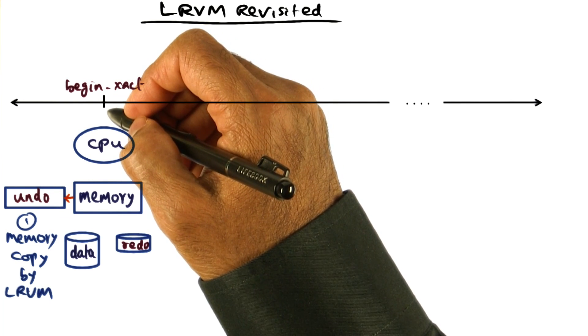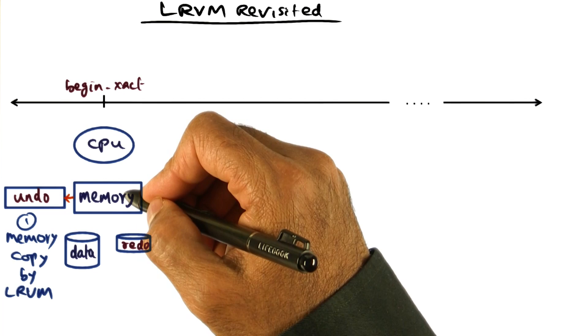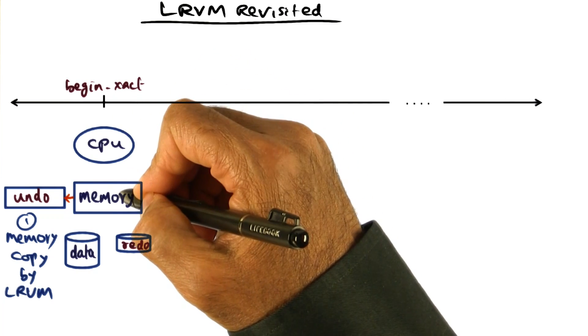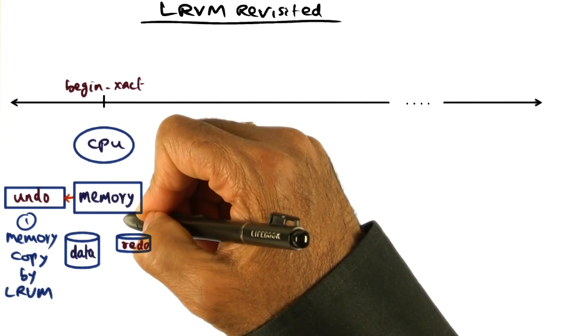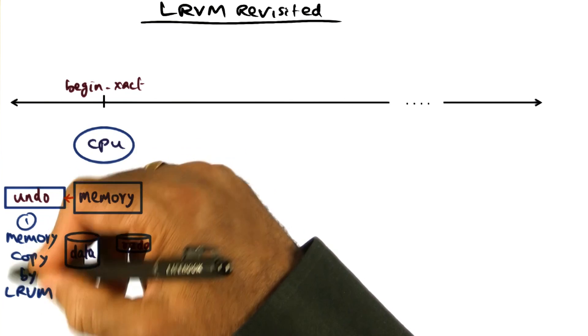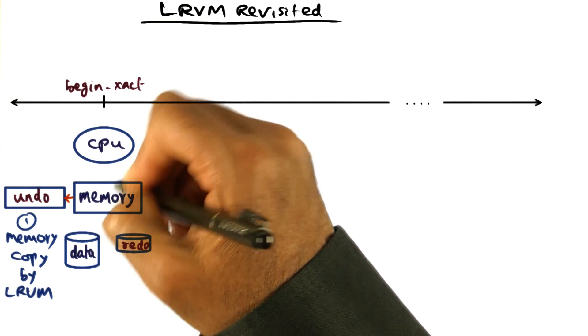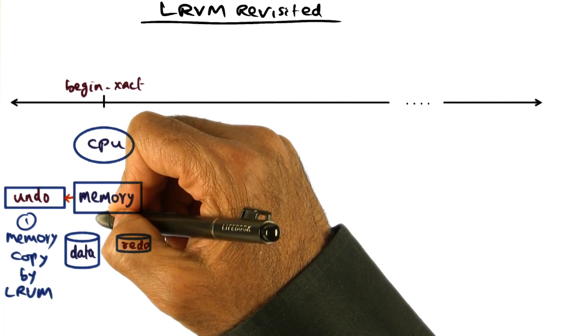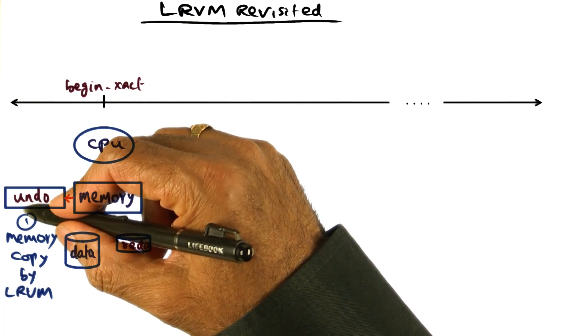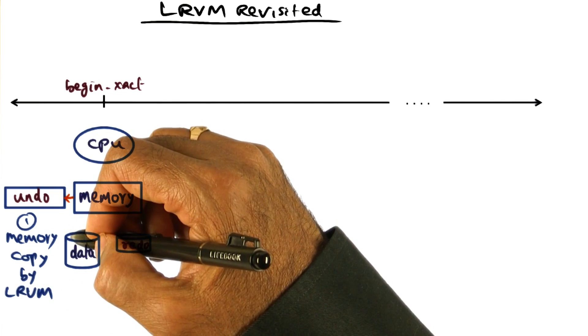what LRVM does is it says, okay, the application is going to modify some portion of the memory. So let me create a memory copy of the old contents of the portion of the memory that this transaction is going to modify and that's what is called the in-memory undo record of LRVM.